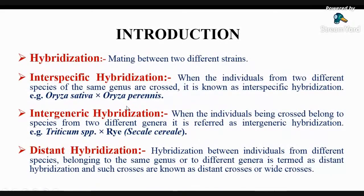Before dealing with distant hybridization, we must know about the term hybridization. Hybridization is a broad term which means mating between two different strains. These two strains may be two inbred lines, two varieties, or two species from the same genus, or individuals from different genera. When the two strains are two different species of the same genus, it is called inter-specific hybridization. When individuals being crossed belong to species from two different genera, it is referred to as inter-generic hybridization.